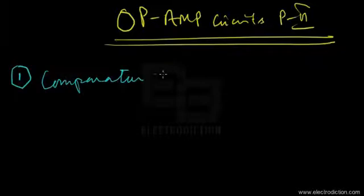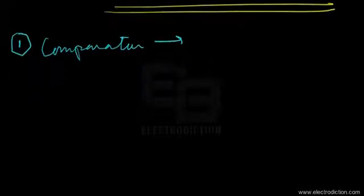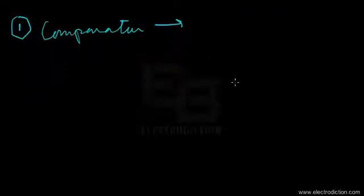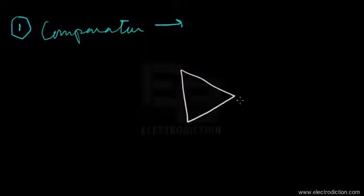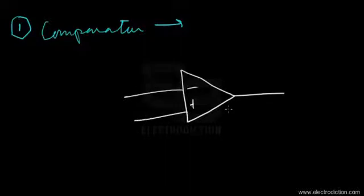That's the comparator. The comparator is basically a circuit constructed using an op-amp which compares two input voltage levels applied on the inverting and non-inverting terminals respectively. It's worth mentioning that the comparator works in the open loop mode of the op-amp.